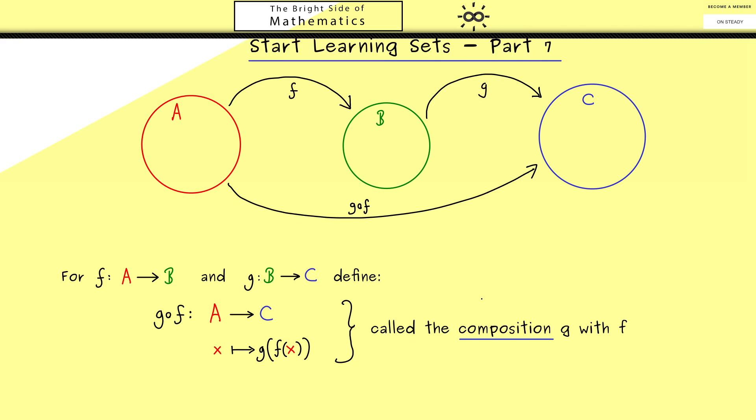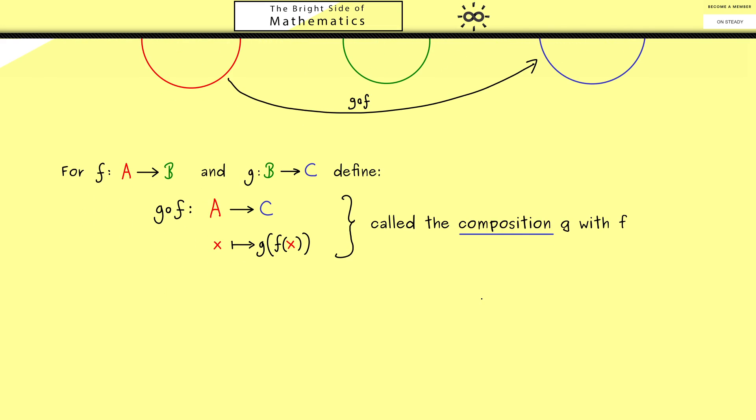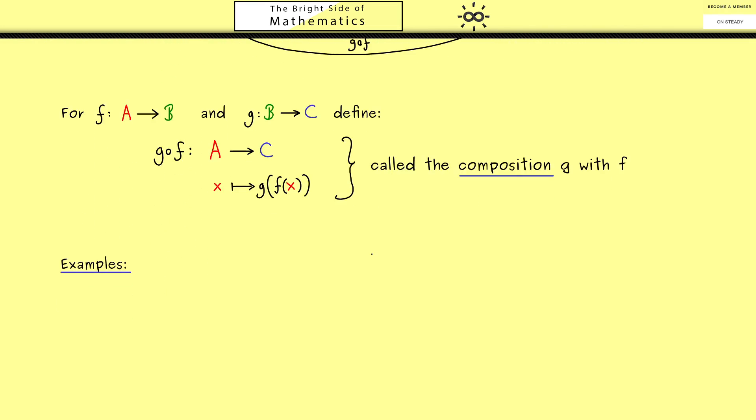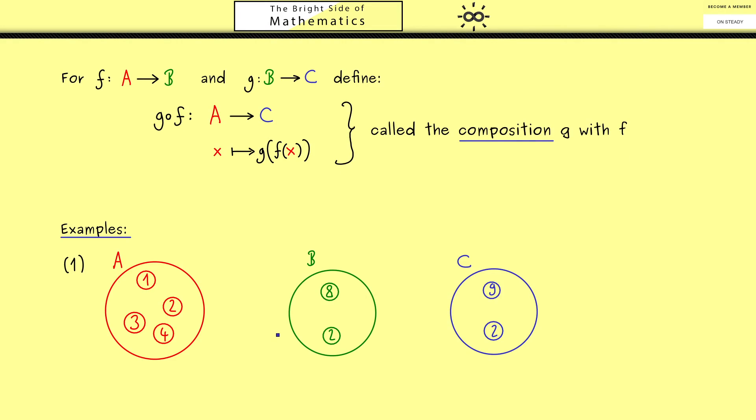Now as always it's good to look at examples first. Let's start with a very simple one. So here you see our three sets. The set A has four elements, the set B has two elements and the set C has also two elements.